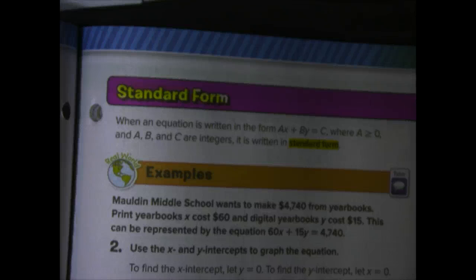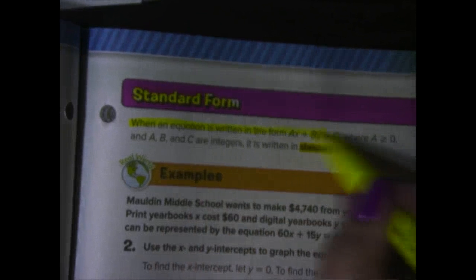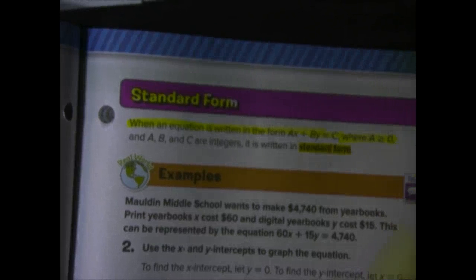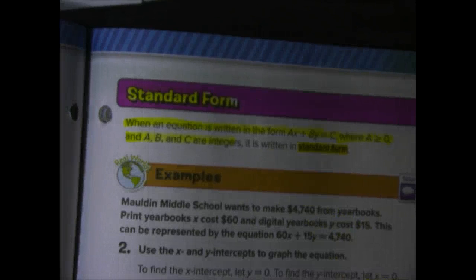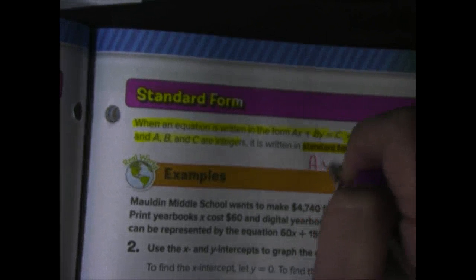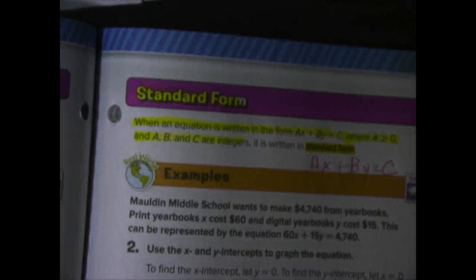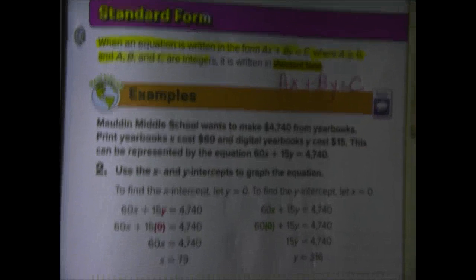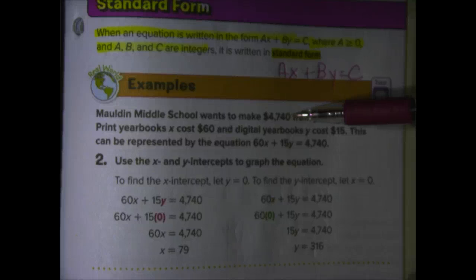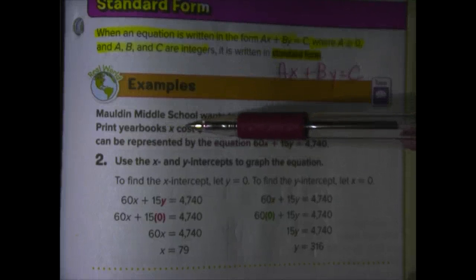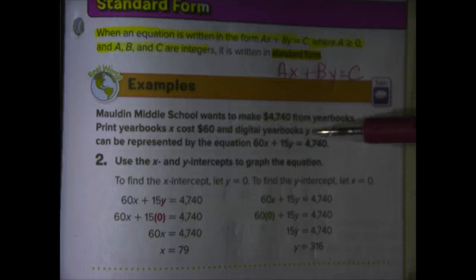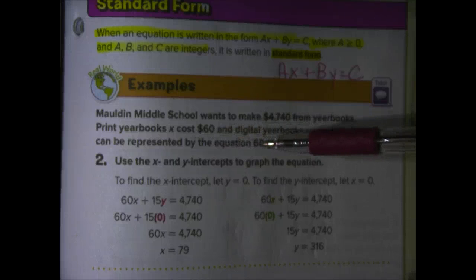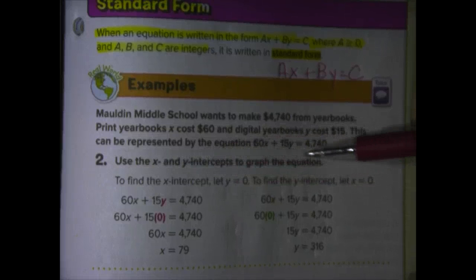Page 211, we're talking about standard form. Now, I've already pointed that out to you on the first page of this lesson. Standard form is when an equation is written in AX plus BY equals C. Where A is greater than or equal to 0 and A, B, and C are integers. So, our form is AX plus BY equals C. Let's take a look at the example. It says, Malden Middle School wants to make $4,740 from yearbooks. Print yearbooks X cost $60. And, digital yearbooks Y cost $15. This can be represented by the equation 60 times X plus 15 times Y equals $4,740.